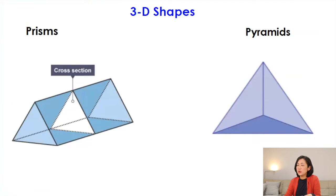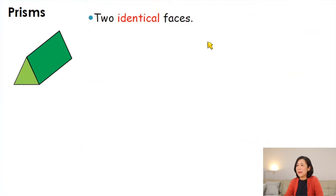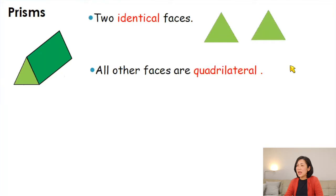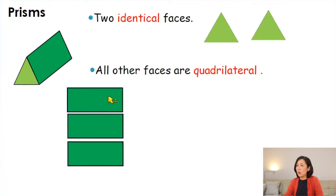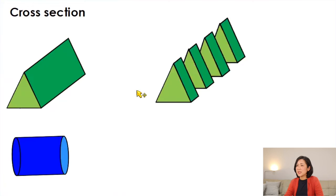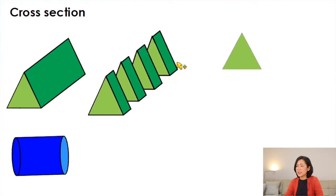First, prisms. A prism can be defined as a 3D shape with two identical faces called the base — it has a top and bottom shape. As you can see, this prism has a triangular base. All the other faces of a prism are quadrilaterals — they can be rectangles or squares.